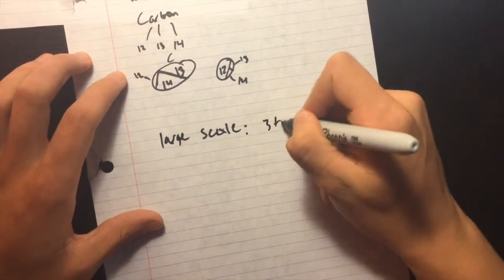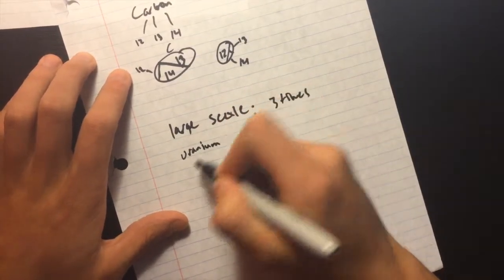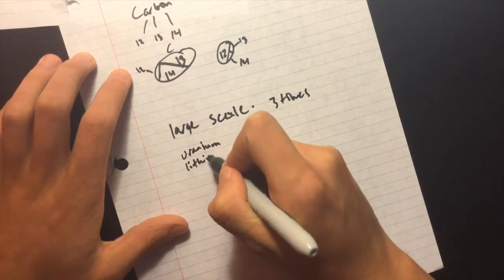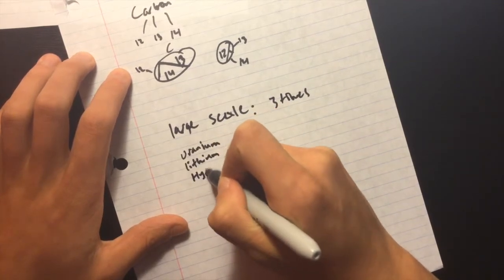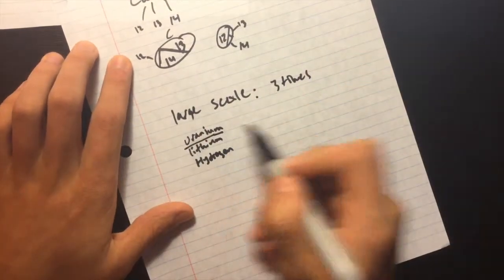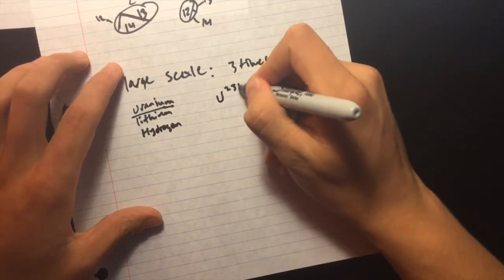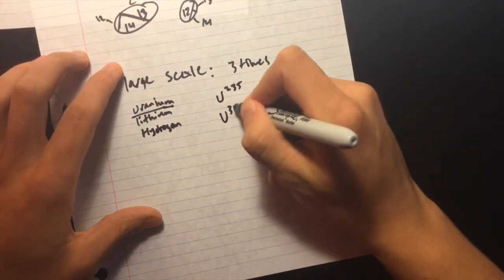It's happened with uranium, lithium, and hydrogen, but we're going to focus on uranium. The isotopes of uranium are uranium-235 and uranium-238.